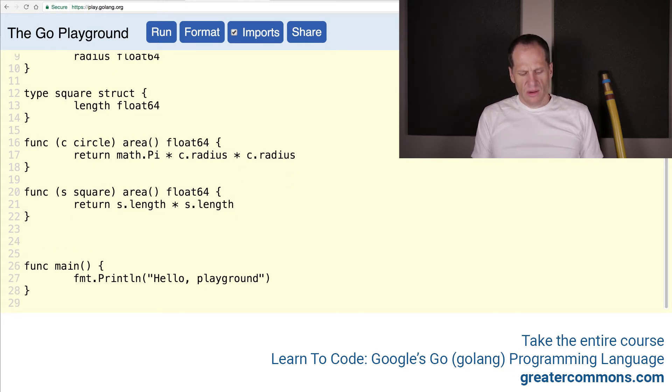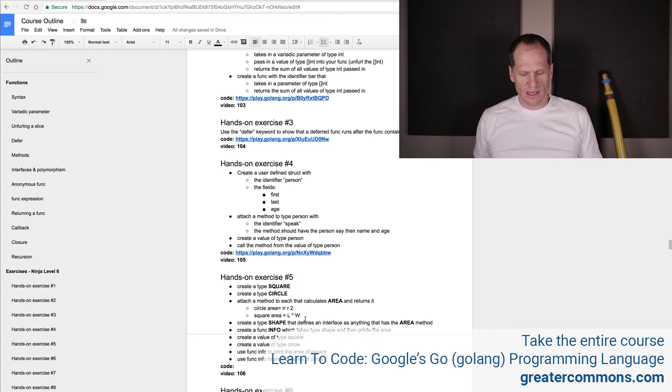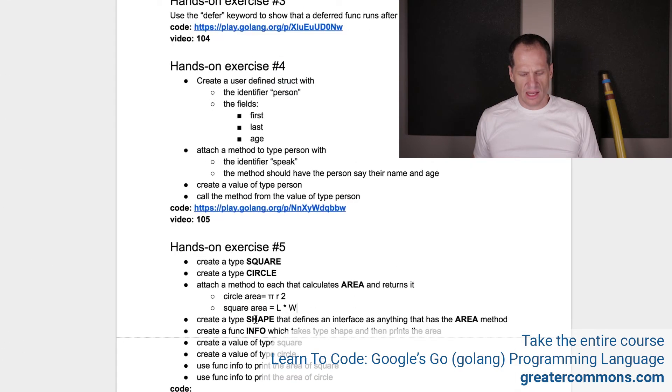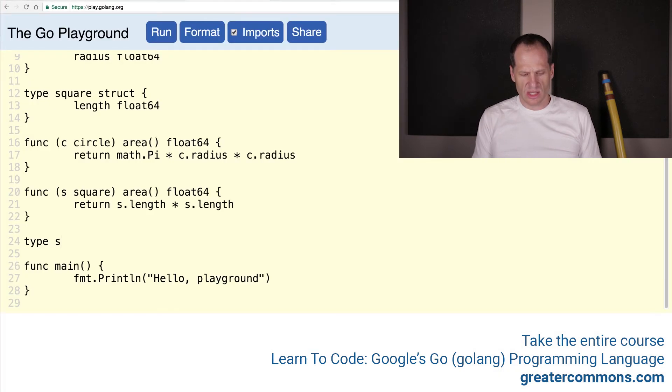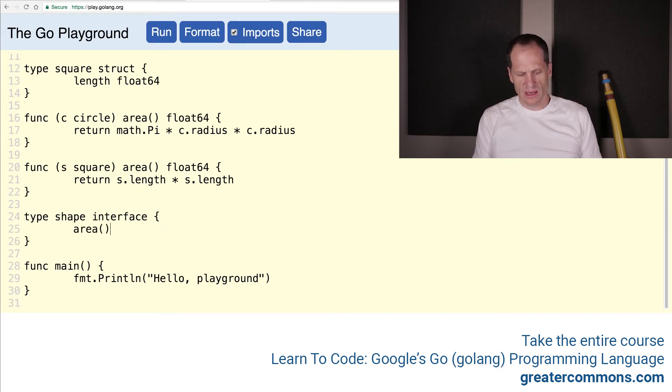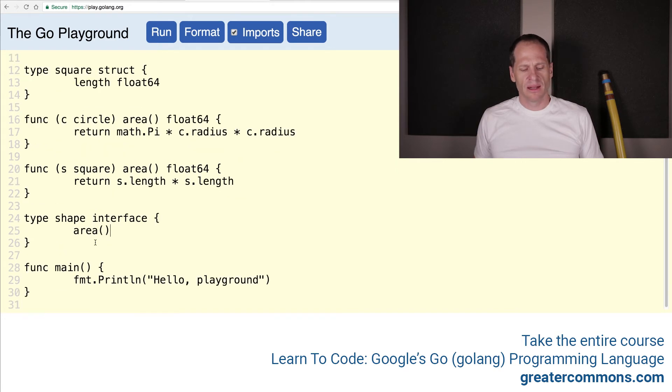And now we need an interface. So we do our keyword. And then what we want to call it. And what did we say we want to call it here? Circle area and then create a type shape that defines an interface as anything that has the area method. And so shape interface is anything that has the area method. And so both circle and square implement implicitly. I haven't said that yet. They implicitly implement the interface. You don't have to explicitly say, hey, hey, this implements that interface. It's just implicitly occurs in the Go programming language. And so both the circle and the square implement the area interface. And so now that's been implemented.